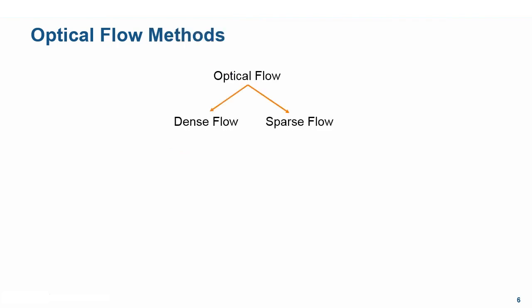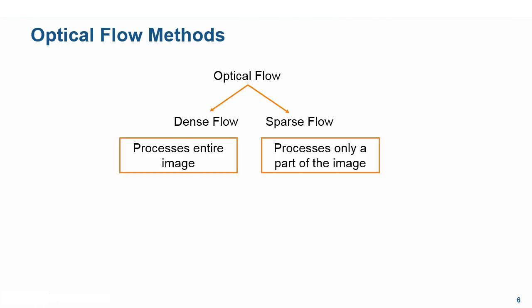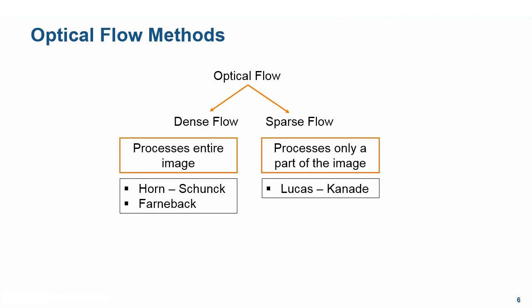There are several optical flow methods available, broadly classified into dense flow and sparse flow techniques. In dense flow methods, we process the entire image and hence all the pixels. In sparse flow methods, we process only a part of the image or a subset of pixels. Consequently, dense flow methods tend to be more accurate but computationally intensive, while sparse flow methods could be computationally fast but less accurate. The Horn-Schunck and Farneback methods are dense flow methods; Lucas-Kanade is a sparse flow method.